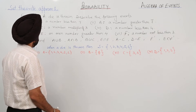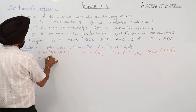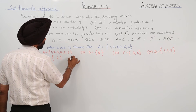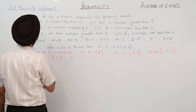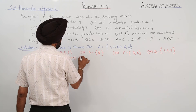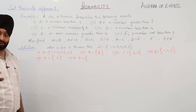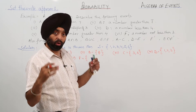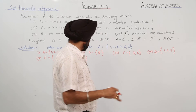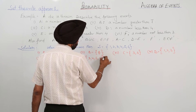Then E: an even number greater than 4 — set E is only {6}. And number 6, F: a number not less than 3. A number less than 3 is 1 and 2, so not less than 3 means all numbers excluding 1 and 2. So F will be {3, 4, 5, 6}.